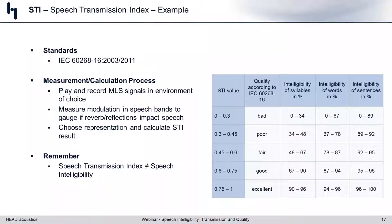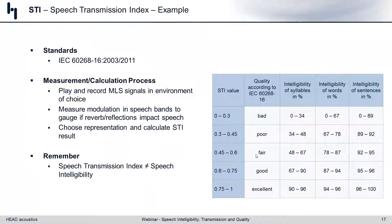One thing to note: Speech Transmission Index does not equal human intelligibility. We once again use a lookup table where your STI value corresponds to an overall grade — similar to a MOS value — going from bad to excellent. At a 50% STI value — the equivalent of 'fair' — we're given some indication of human intelligibility: somewhere between 48% and 67% of syllables within a word would be intelligible.